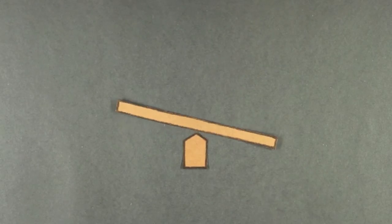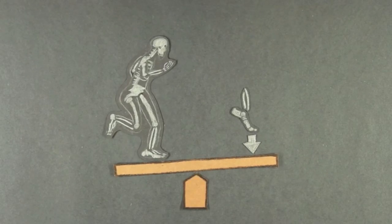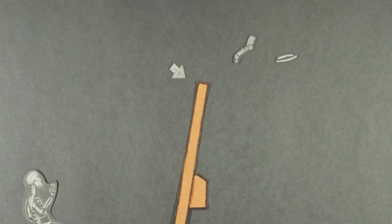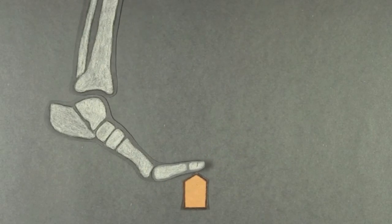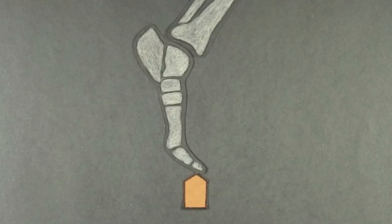Think about a seesaw. Applying pressure further away from the center makes it harder for the other side to balance it. With shorter toes, a lot less energy would be required to push the body forward.